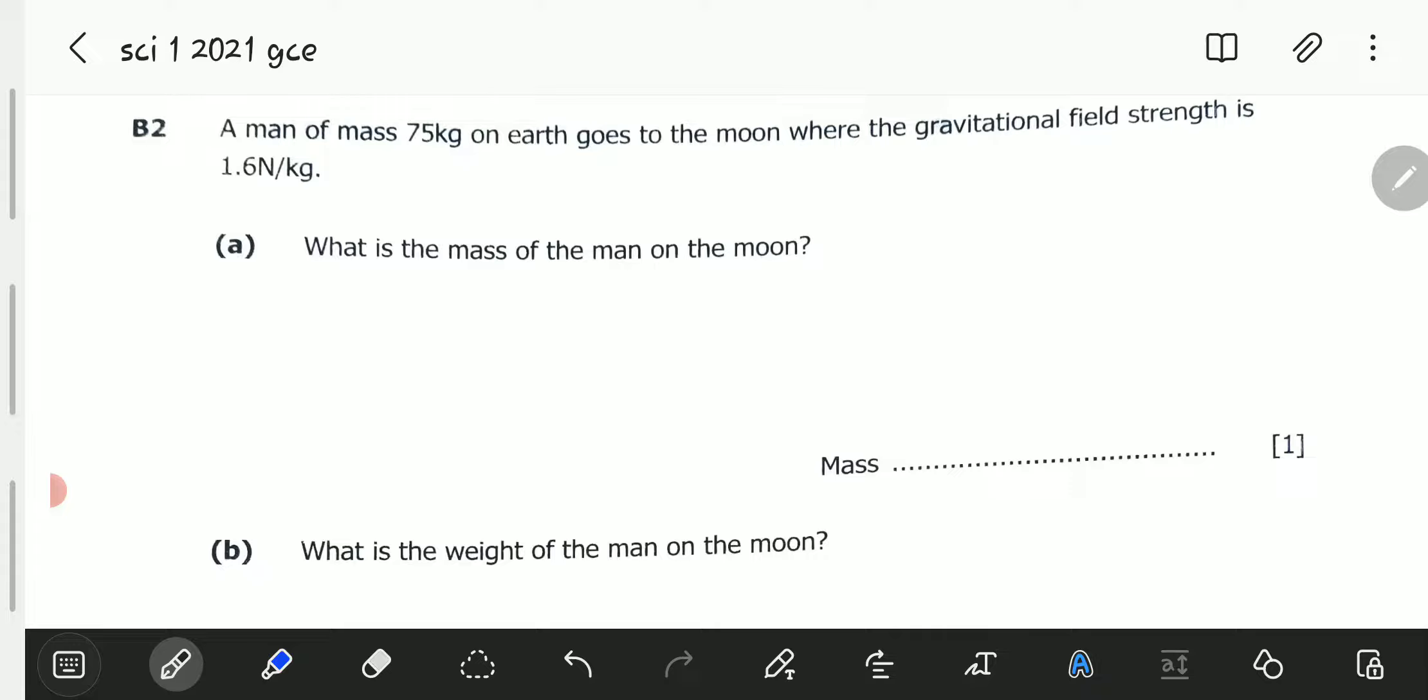Question B2 reads: a man of mass 75 kilograms on Earth goes to the moon where the gravitational field strength is 1.6 newton per kilogram. Part A, what is the mass of the man on the moon?